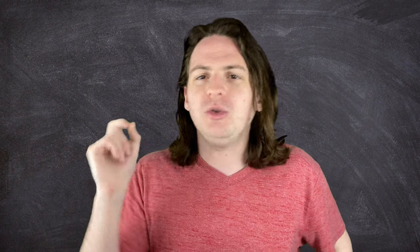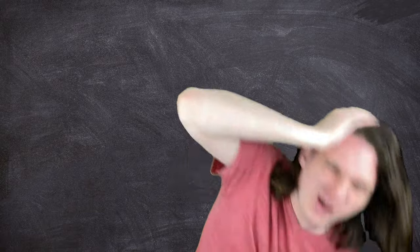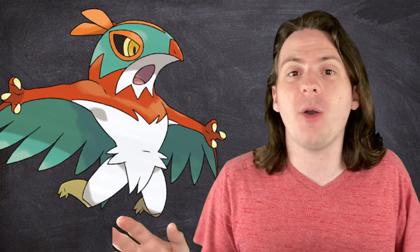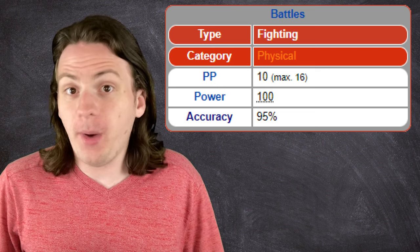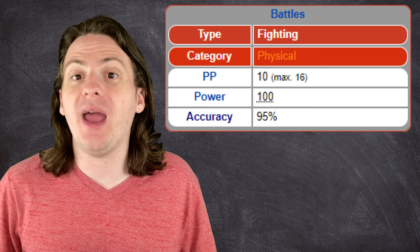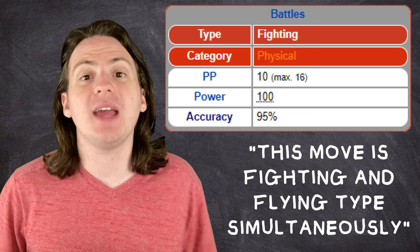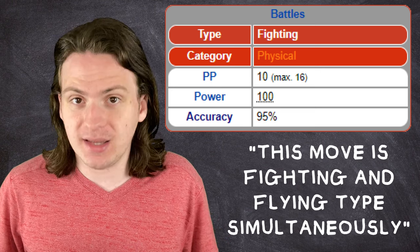Hawlucha is a fighting and flying type Luchador themed Pokemon, and it has a signature move called Flying Press, or better known to me as the Frog Splash. This move is listed in-game as a fighting type move, but if you read the description, you'll find that it's actually a fighting and flying type move simultaneously. But what does that mean? Well, just like dual type Pokemon, adding another type to a move changes the type chart, and you need to multiply together the multipliers for both fighting and flying on each type you've attacked.